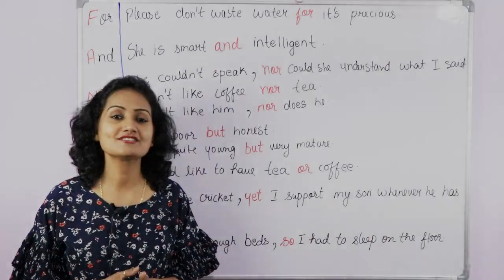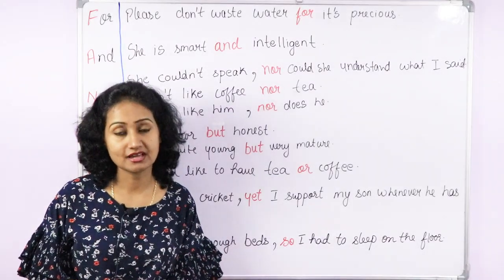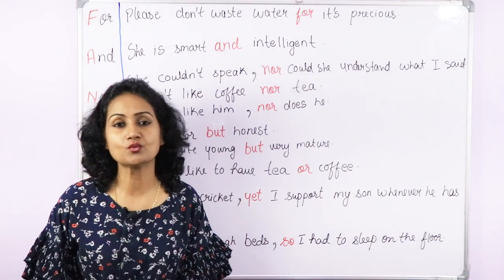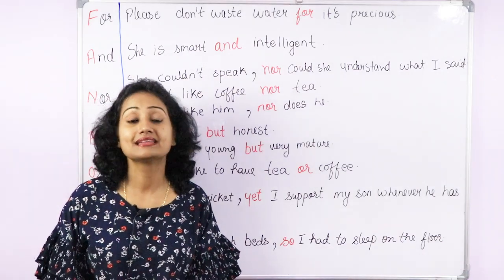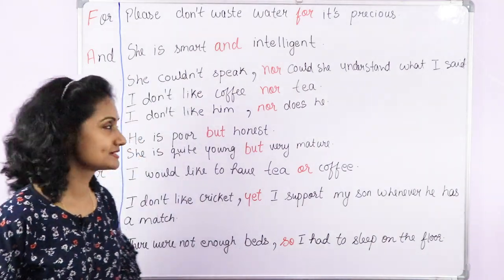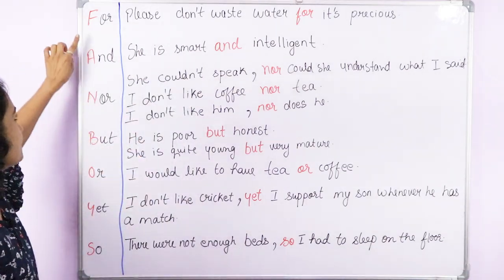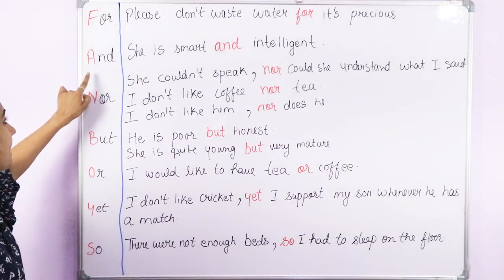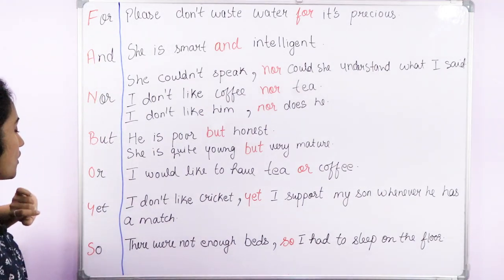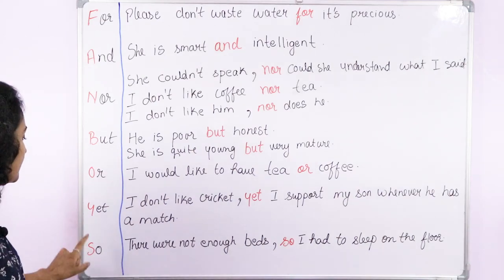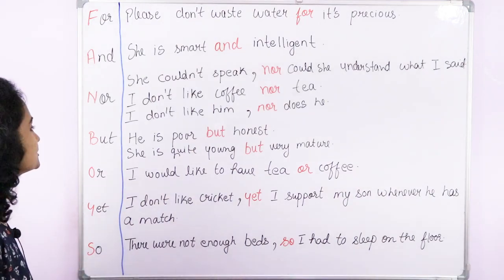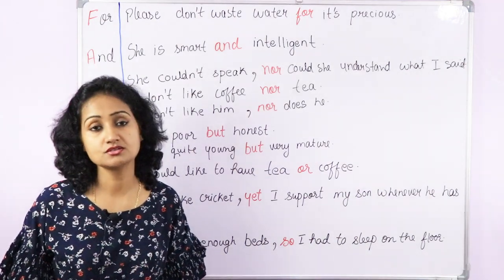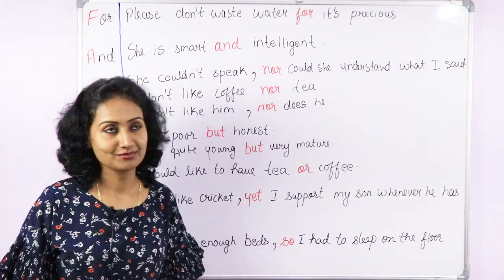There are seven types of coordinating conjunctions, and to remember them you just have to learn one word: FANBOYS. F-A-N-B-O-Y-S — For, And, Nor, But, Or, Yet, So. Now let's go through them one by one to see how to use them.